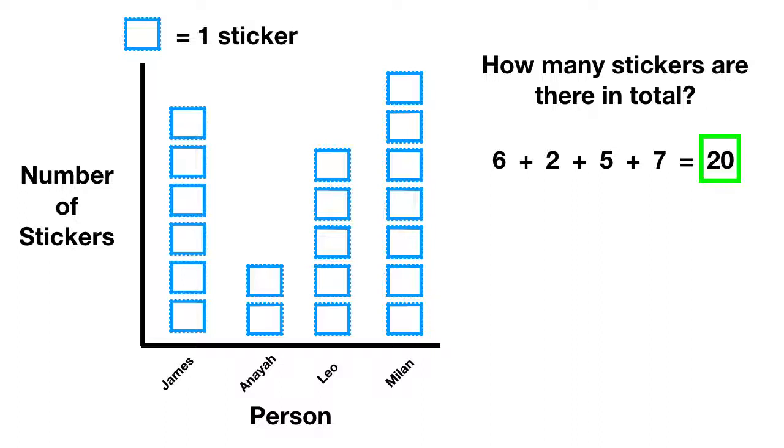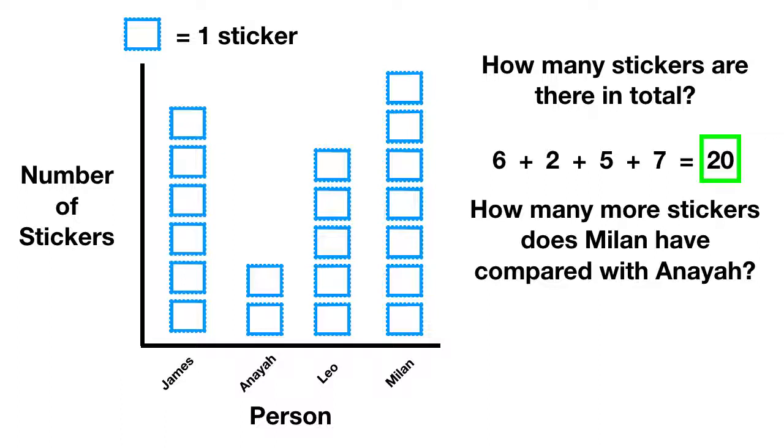Now here's your last question for this video. How many more stickers does Millen have compared with Anaya? Well, we can count Millen as one, two, three, four, five, six, seven. To compare, we'll subtract. And Anaya has one, two. This means when we solve, we can find Millen has five more stickers than Anaya.